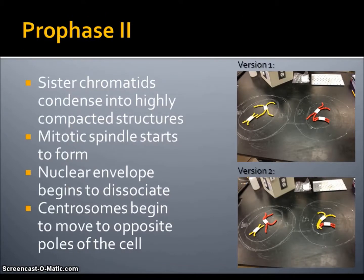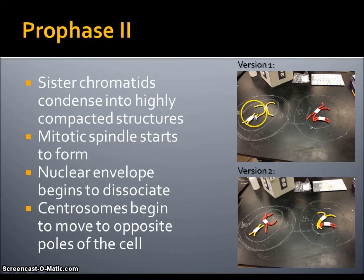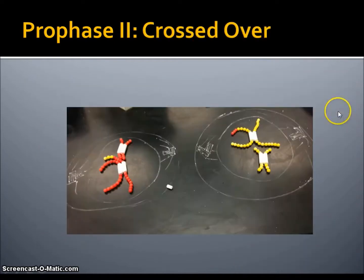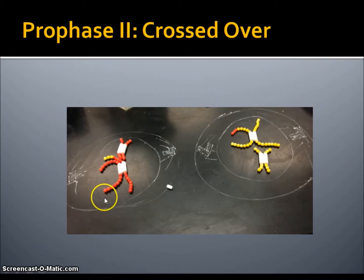Prophase II starts off the second meiotic division, meiosis II. This is when sister chromatids condense into highly compacted structures, the mitotic spindle begins to form again, the nuclear envelope begins to dissociate, and centrosomes begin to move towards opposite ends of the cell. These are basically the same photos from our telophase I and cytokinesis. Here is our photo for prophase II of our crossed-over pair.